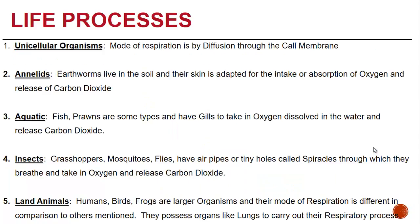In unicellular organisms, respiration is by a mode of diffusion through the cell membrane. In annelids, the earthworms live in the soil and the skin is adapted for the absorption of oxygen and the release of carbon dioxide.